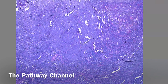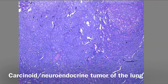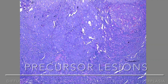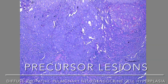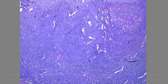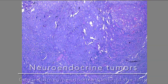Hello my friends and welcome to the Pathway Channel. This slide is about the carcinoid tumor of the lung. Before we go through this slide, let's remember the WHO classification. We have the lung neuroendocrine neoplasms, which include precursor lesions like diffuse idiopathic pulmonary neuroendocrine cell hyperplasia, and the neuroendocrine tumors, which are the carcinoid neuroendocrine tumors of the lung.